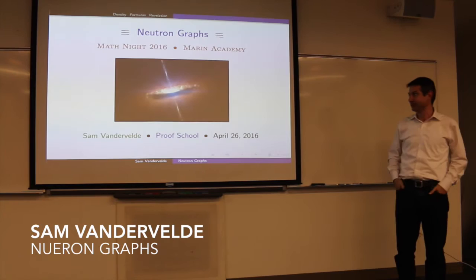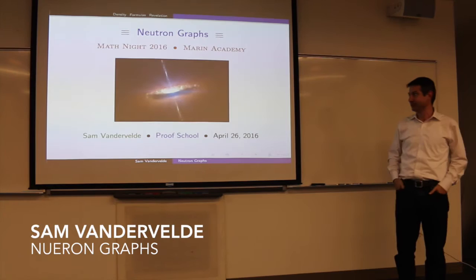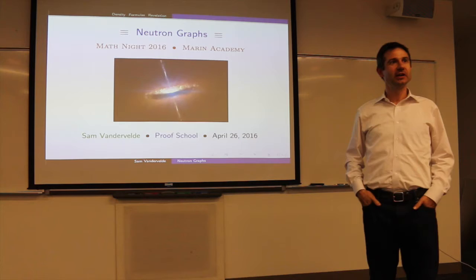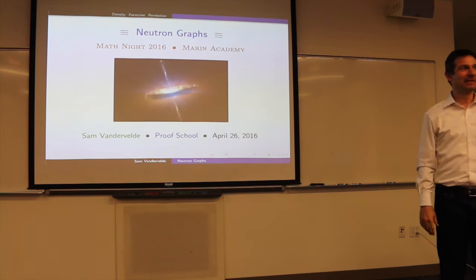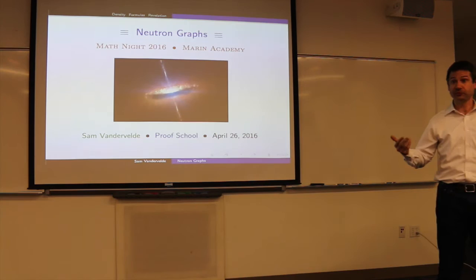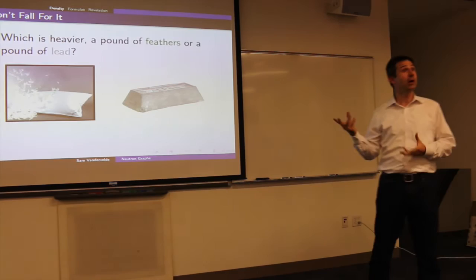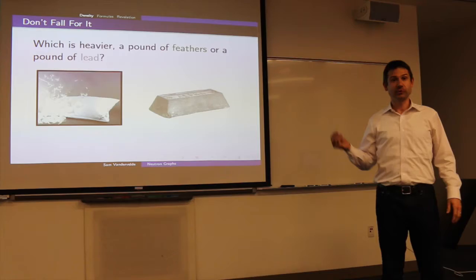I think I have some explaining to do because I've chosen a title for this talk that is a bit mysterious. If any of you have attempted to Google what a neutron graph is, you presumably didn't find much because I've just made these up in the past month. You're among the very first to meet these creatures. To help motivate why we refer to these graphs as neutron graphs, we're going to get there by way of physics.